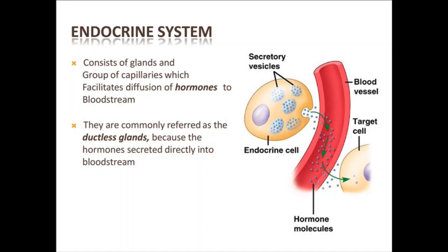Now we will discuss the endocrine system of our body. The endocrine system consists of glands and a group of capillaries which facilitates the diffusion of hormones into the bloodstream.